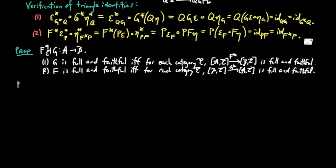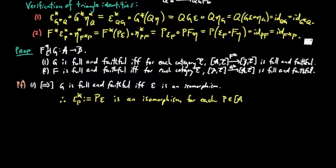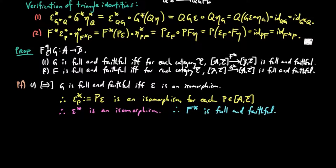For (1) in the forward direction: G is full and faithful if and only if the co-unit is an isomorphism. Therefore, ε*_P, defined as Pε, is an isomorphism for each component P. Therefore the co-unit ε* is an isomorphism, and so F* is full and faithful, since it is the left adjoint part of the adjoint situation.